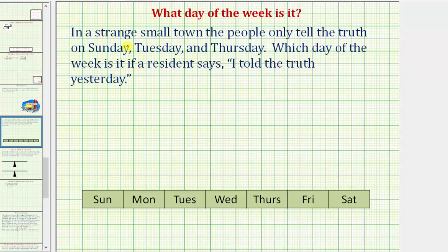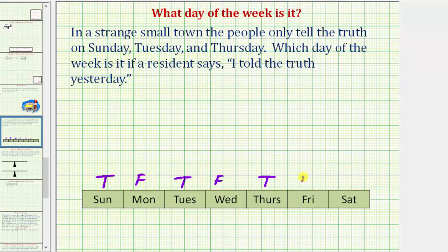Let's put a T for true on the days Sunday, Tuesday, and Thursday to indicate whatever is said on those days is true. Which means on the remaining days, whatever the resident says would be false. So let's use a capital F on Monday, Wednesday, Friday, and Saturday to indicate the days in which whatever the resident says is false.